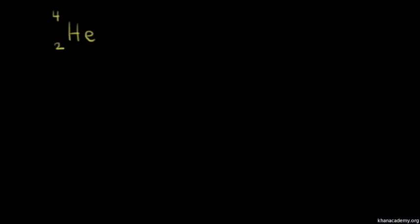Let's say we wanted to calculate the mass of a helium-4 nucleus. First we have to figure out what's in the nucleus. With an atomic number of two, we know there are two protons in the nucleus. And subtracting the atomic number from the mass number, four minus two gives us two neutrons.